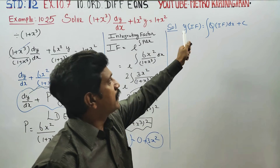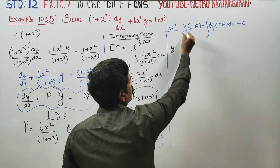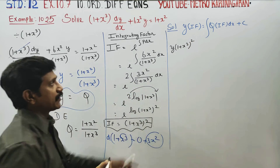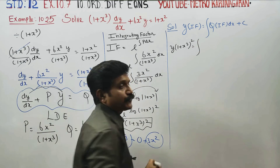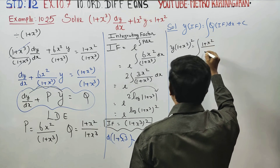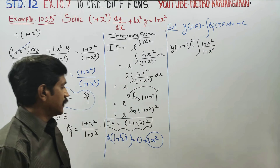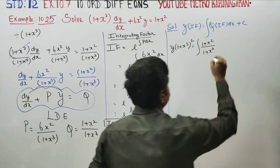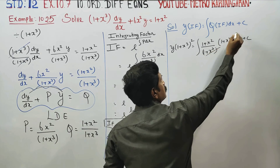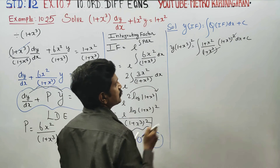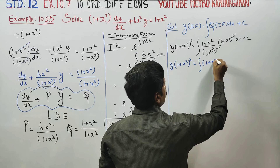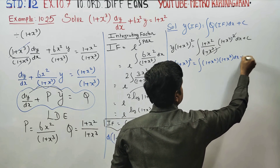Now substituting the integrating factor into the main sum. The integrating factor is 1 plus x cube whole square. Then y into 1 plus x cube whole square equals integration of Q, where Q equals 1 plus x square by 1 plus x cube, into the integrating factor 1 plus x cube whole square, dx plus c.